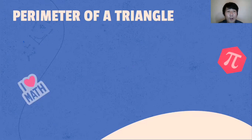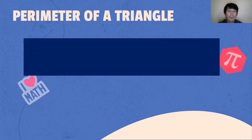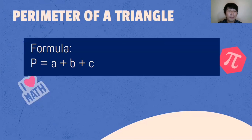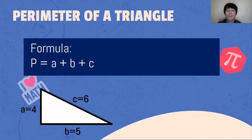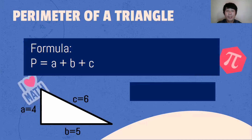Let's now move on to how to get the perimeter of a triangle. The formula to be used will be: Perimeter = Side A + Side B + Side C. For example, side A is equal to 4, side B is equal to 5, and side C is equal to 6.